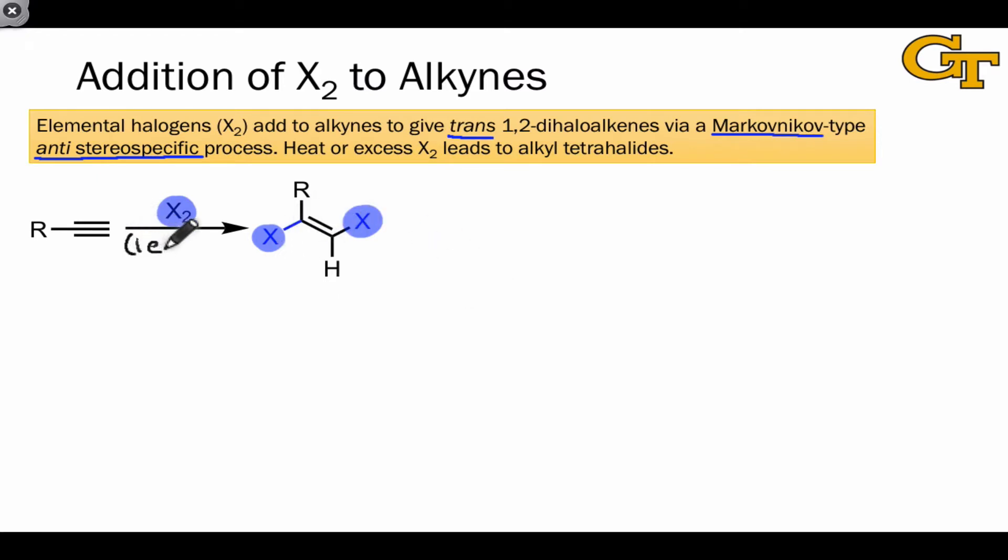When only one equivalent of the elemental halogen is used in this reaction, it stops at the dihaloalkene. This is because each of the halogen atoms is inductively withdrawing, pulling electron density towards itself. This makes the double bond in the product a much worse nucleophile than the triple bond in the starting material. The electron withdrawing effect of the X groups makes the double bond a poor nucleophile.